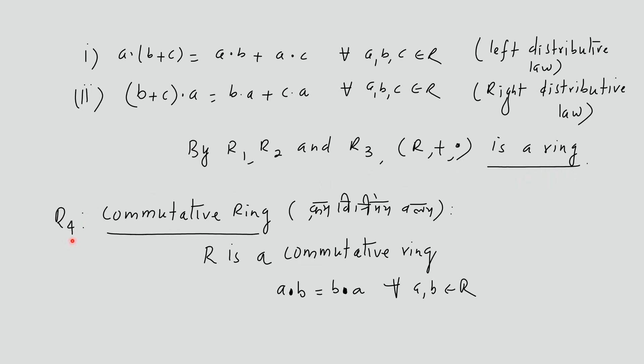R4: Commutative Ring. R is a commutative ring if a·b = b·a for the second operation, for all a, b ∈ R.